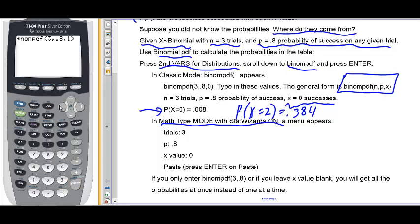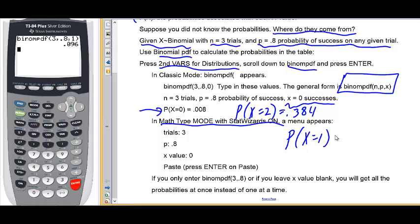And it's set up to do it. If we scroll back over, we can pick up on the first part of the word binomial. Binomial pdf 3.81. Hit enter. And so, probability that x equals 1 is .096. I guess I had a zero here on the handout.